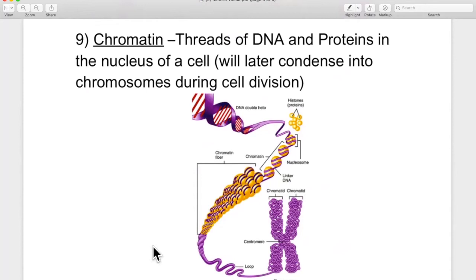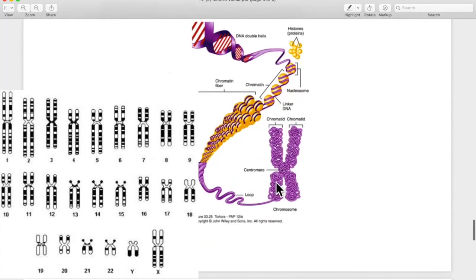Chromatin, chromatid, and chromosome all refer to DNA. Remember, DNA is chopped into 46 pieces. Those are called chromosomes. We'll get to that. But chromosomes are wrapped up. They're braided. Chromatin is unbraided DNA. Threads of DNA and proteins in the nucleus of a cell will later condense into chromosomes during cell division. That's all chromatin is, guys, your DNA floating loose. This is chromatin, and it gets all braided up into a chromosome. And you get 46 of these.